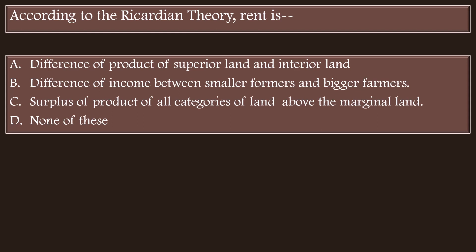Kindly recollect the example cited by David Ricardo. There are three grades of land. First grade land is the most fertile land, second grade land is less fertile than first grade land, and third grade land is least fertile.